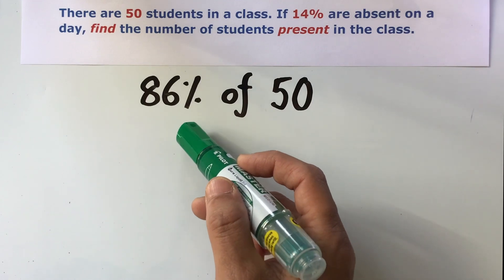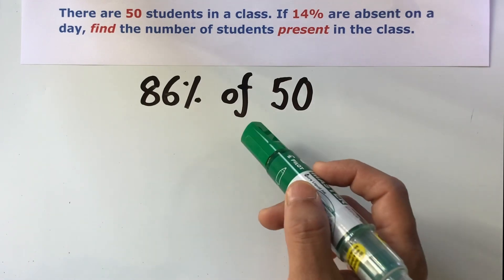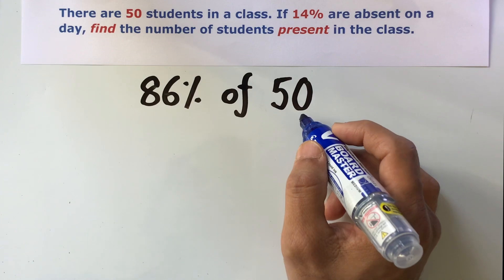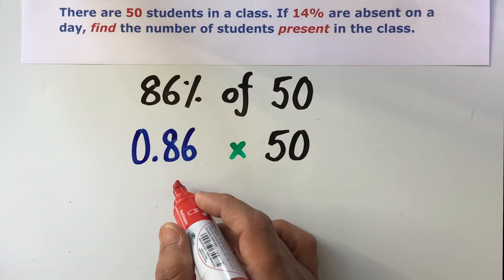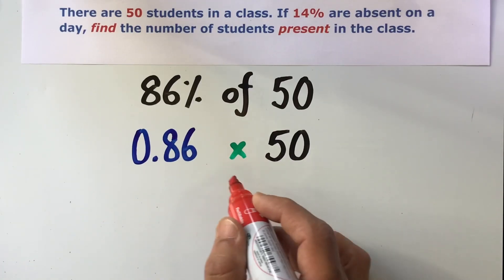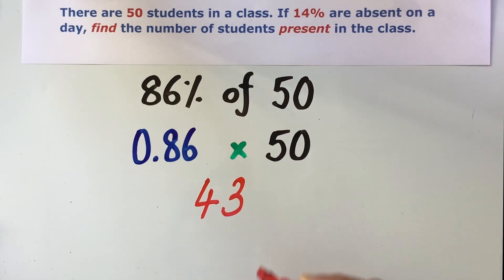Again, we first convert 86% into a decimal, and replace of with a multiplication sign, and leave 50 as it is. Now, when we multiply 0.86 with 50, we get 43 as the answer.